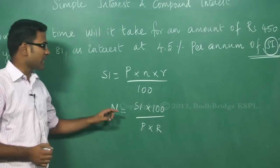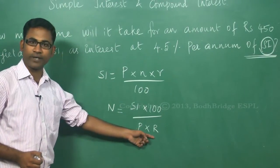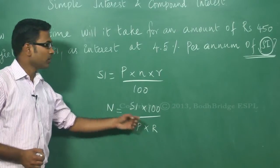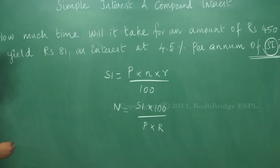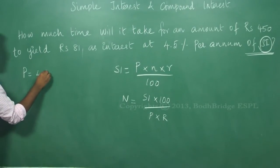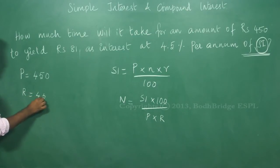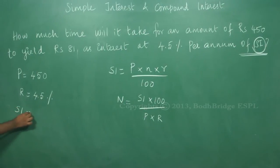What else information I need? Simple interest, the principal amount and the rate of interest. The principal amount in this is 450. The rate of interest is 4.5 percent. The simple interest that we obtained is 81. These are the information present: the principal amount, rate of interest and simple interest 81.